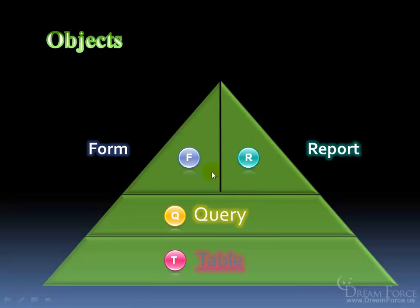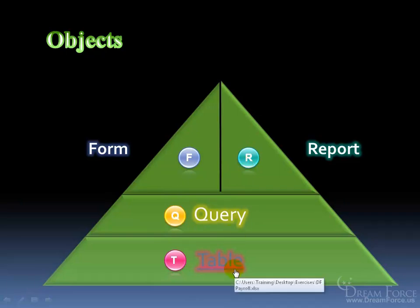On top of a query, Access has what are called forms and reports. A form is something you can create as a place where you organize the fields and control how the user inputs data into the table — because a table is where you store all the data. Once you type in data, it dumps it right into the table, and forms can be made to look really nice. A report is information taken from the table in an organized way — a way of pulling out information in a nice organized manner.